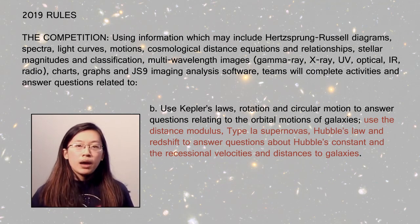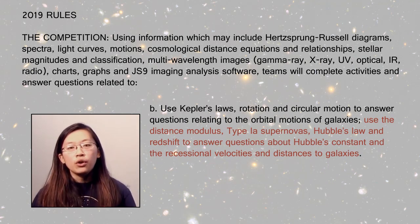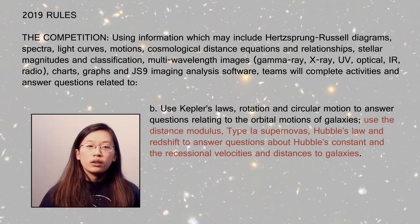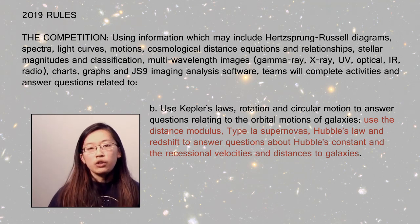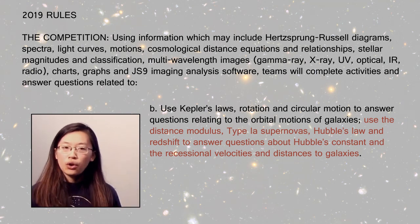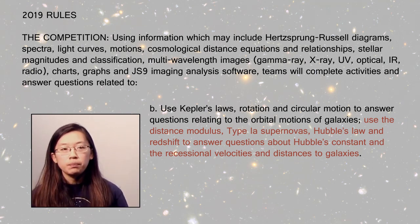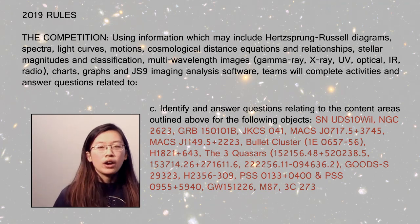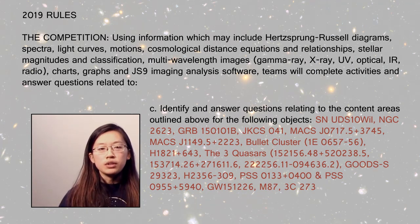Moving on to the topics for this year, there are some changes and it's much more tilted towards distant galaxies and cosmology. On the list are things like quasars and AGNs, but also dark matter, dark energy, and the cosmic microwave background. Similarly, the math you're required to know is much more galaxies and cosmology based — things like Hubble's Law and Redshift. And as usual, there's an entirely new list of DSOs.